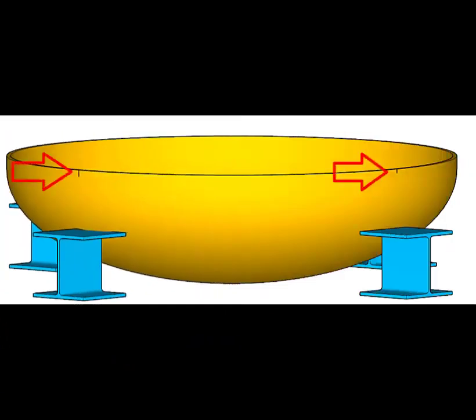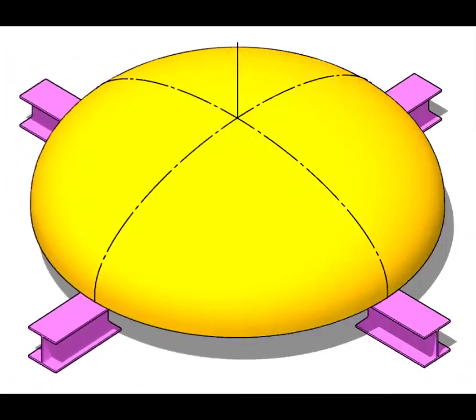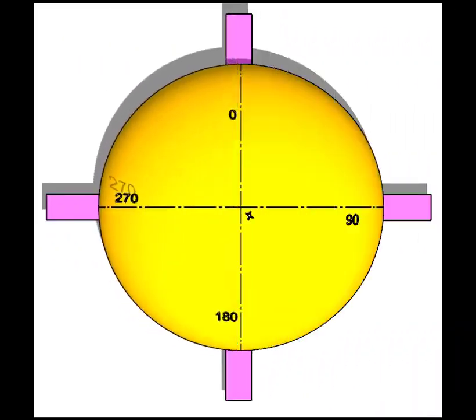Divide the circumference of the dish end into minimum four equal parts. Now, put the dish end upside down and level. Draw lines through the center, connecting the previously marked points. Mark the zero, 90, 180 and 270 degrees.